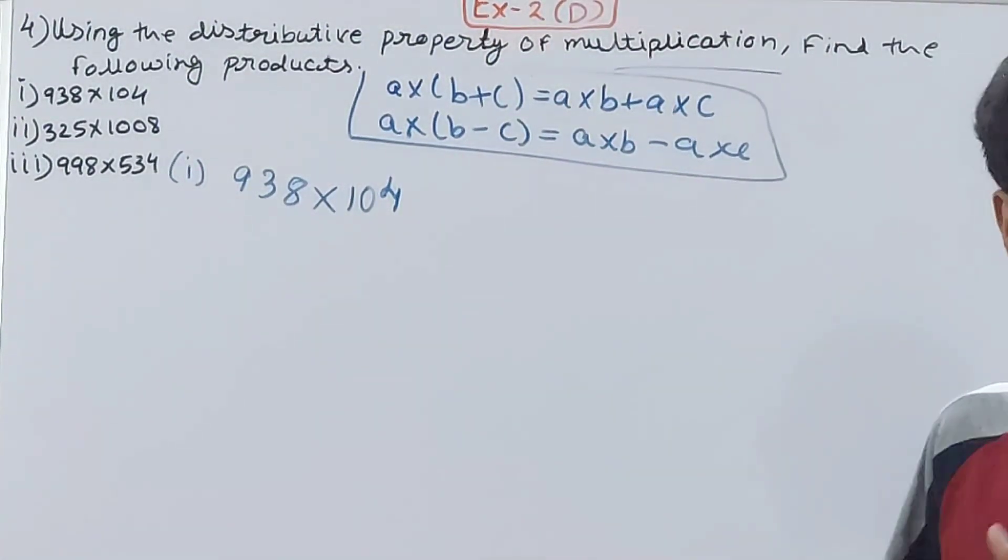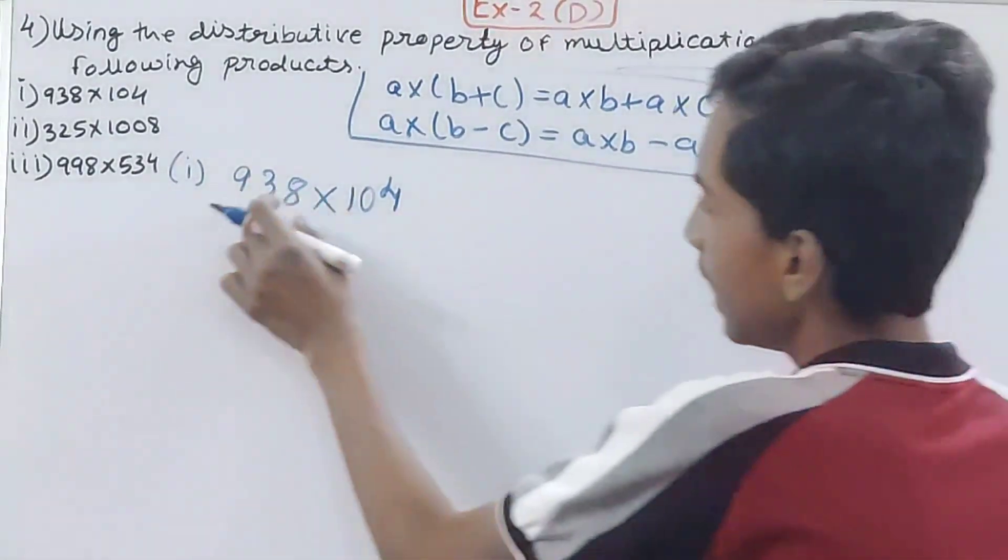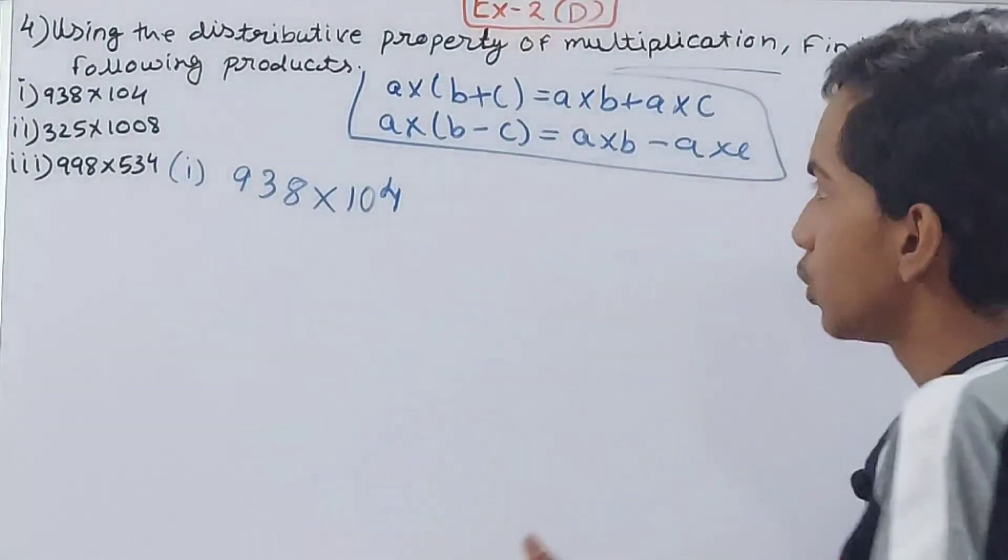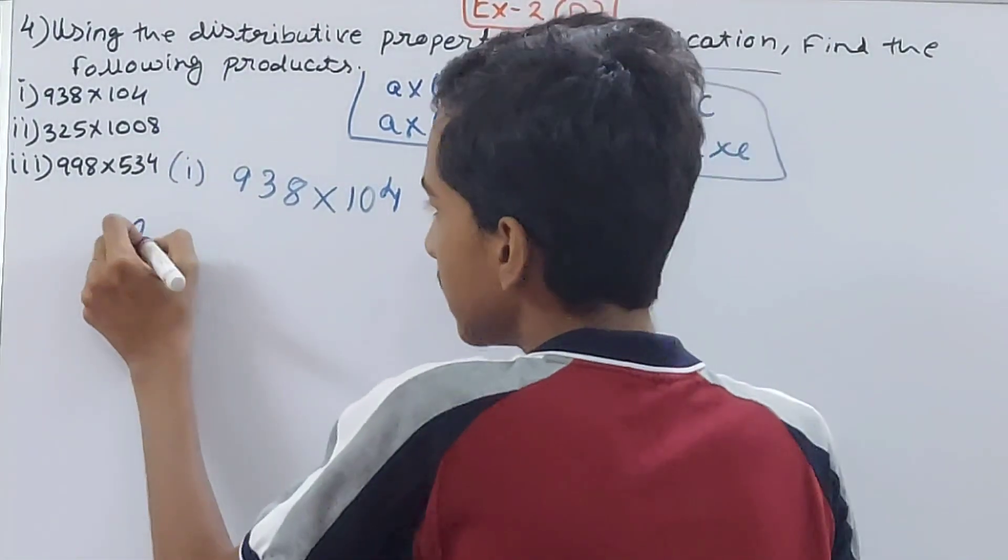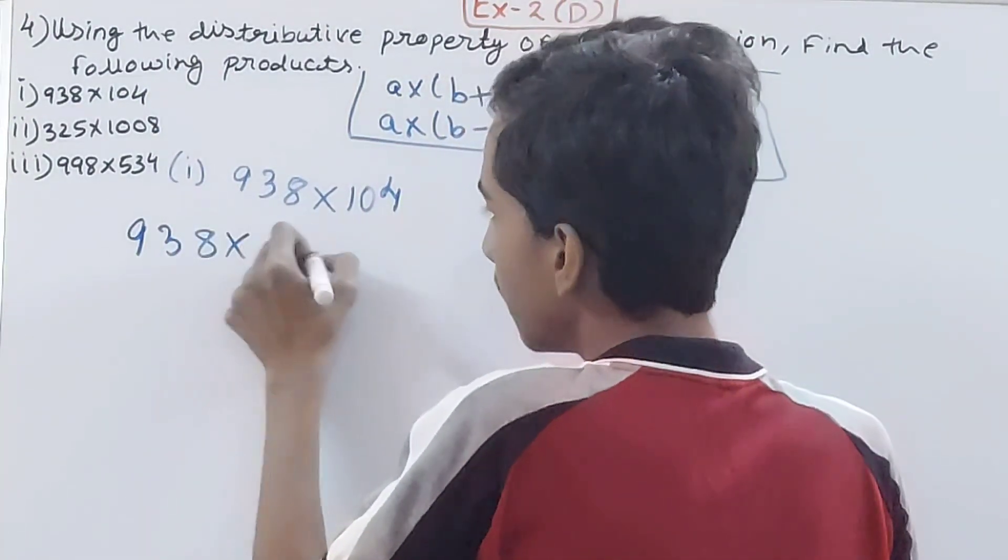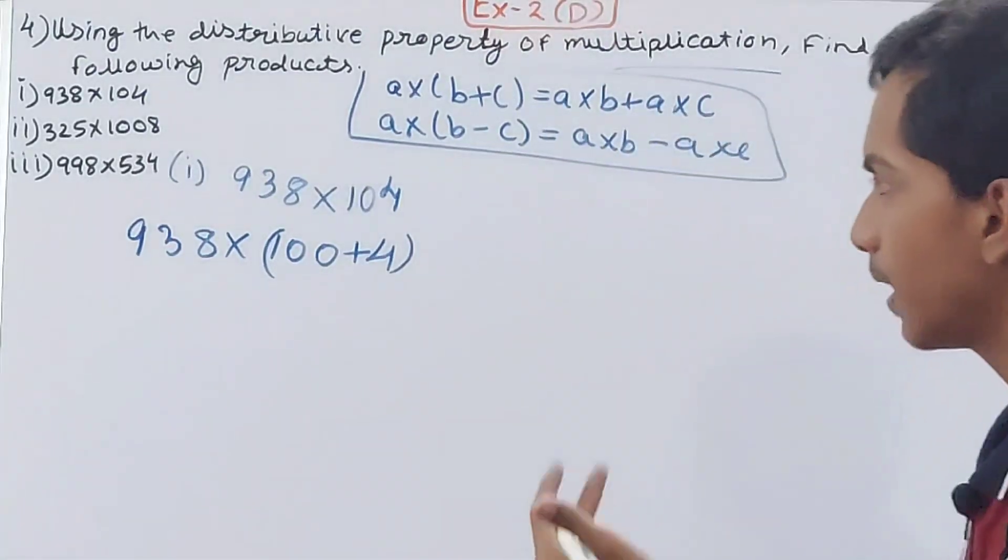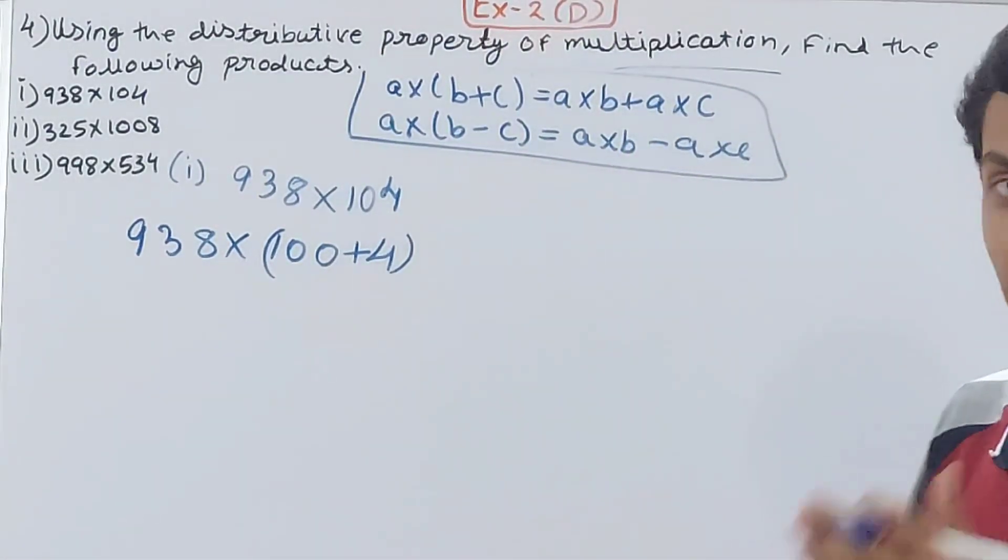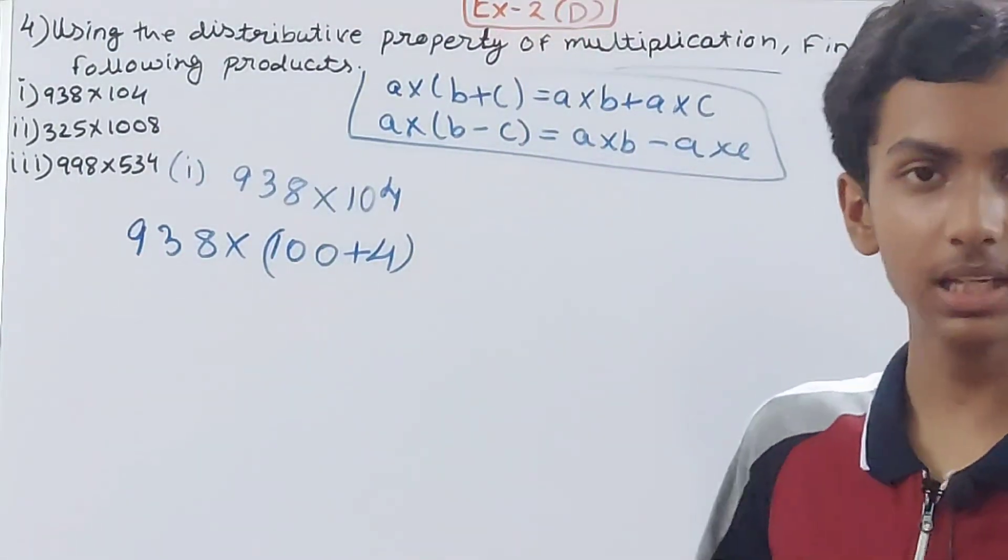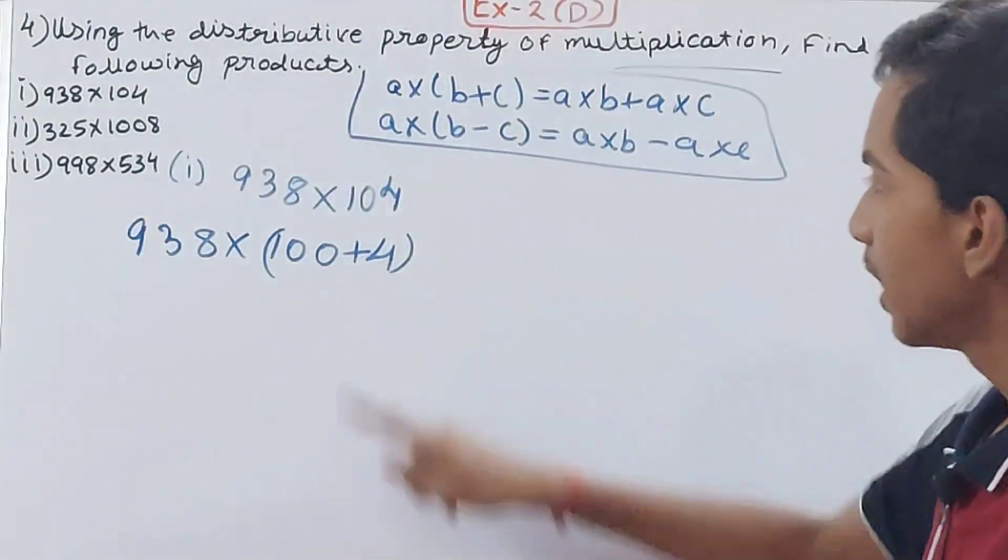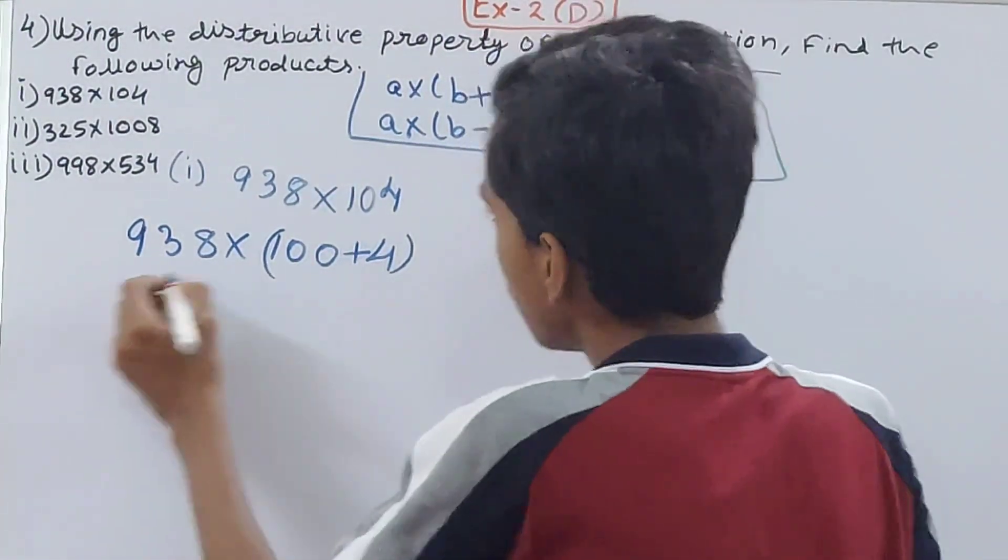You have to break it according to your convenience so your calculation becomes easier. 938 cannot be broken down, so I'm going to break 104 as 938 × (100 + 4). You should look for 10, 100, 1000, 10,000 and so on while using distributive property because they make calculation much easier.